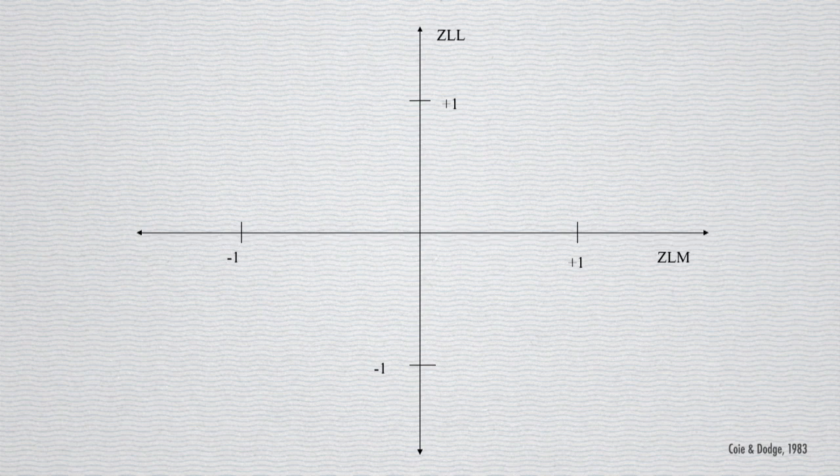You might have previously thought that being like the most and being like the least were kind of two ends of the same continuum. It turns out that's not the case. In study after study what we find is that the number of nominations you get for like the most and the number you get for like the least, they're not associated at all. They're not at all correlated. So these really are two very different things, which is why we look at it on this type of axis.